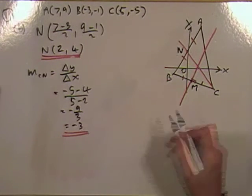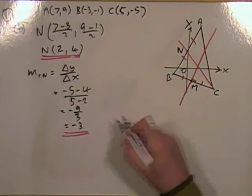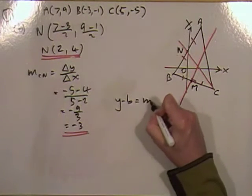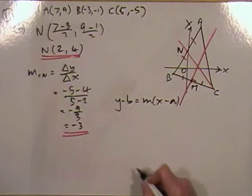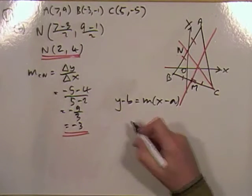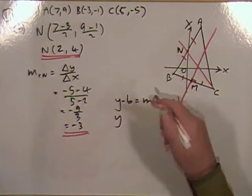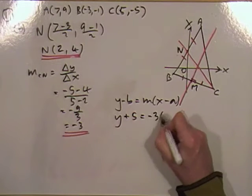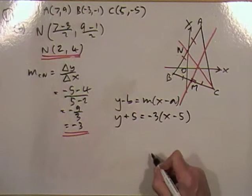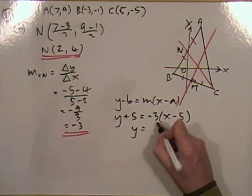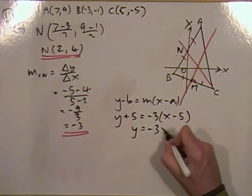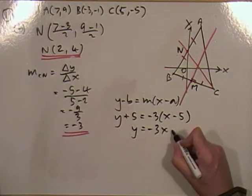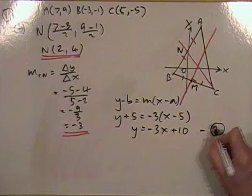The equation of that line, using point C: y plus 5 equals negative 3 times x minus 5. So y equals negative 3x plus 15 minus 5, which gives y equals negative 3x plus 10. I'll call that equation 2.